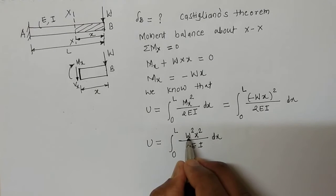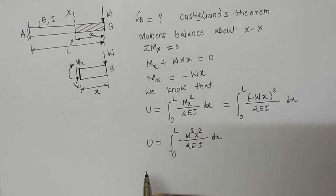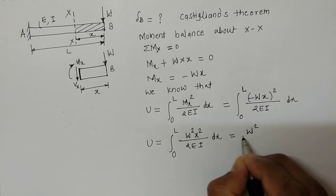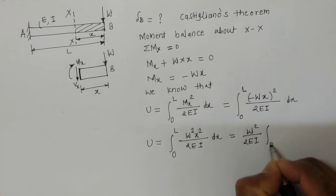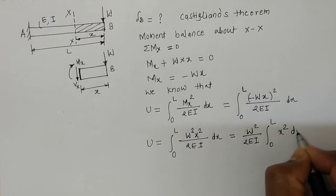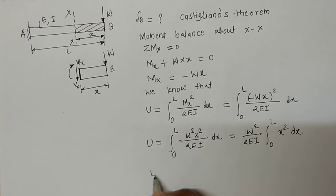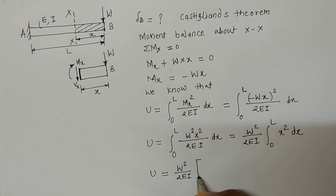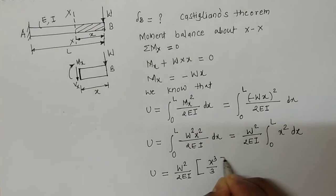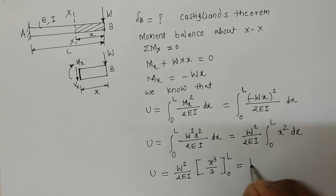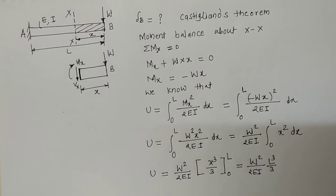Since W, E, and I are all constants, they can be taken outside the integral, giving U = (W²/2EI) ∫₀ᴸ X² dx. Evaluating the integral, ∫X² dx = X³/3, applying limits 0 to L gives U = (W²/2EI)·(L³/3). This is the expression for strain energy stored in the entire beam.